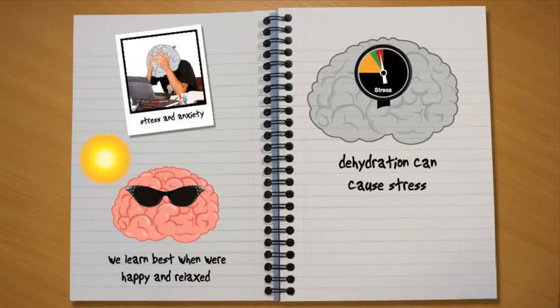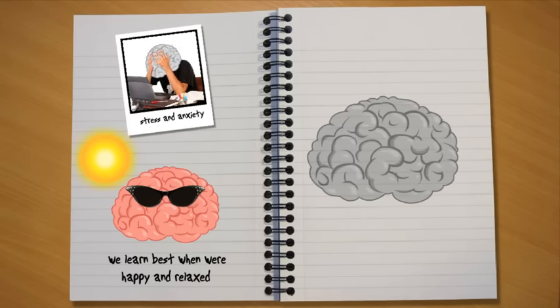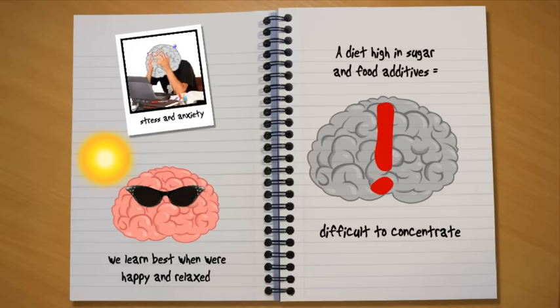The brain also needs the right balance of proteins, fats, vegetables, carbohydrates and sugars to work efficiently. So, maintaining a balanced and healthy diet is important for effective learning. If you have a diet that is too high in sugar and food additives, you will probably find it difficult to concentrate well, and it might even affect the way you behave.